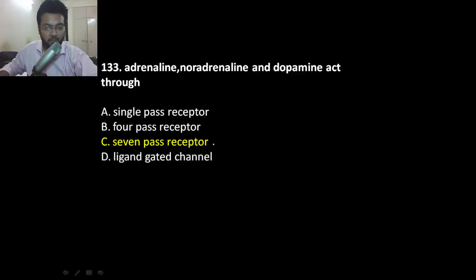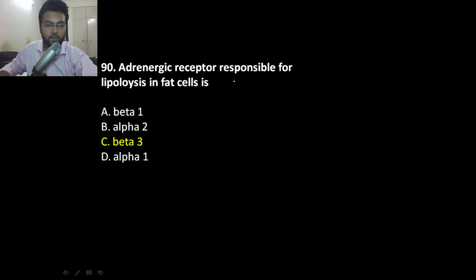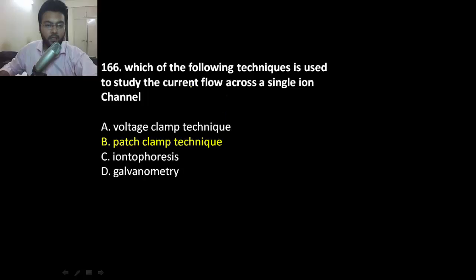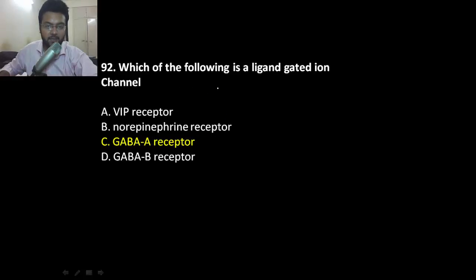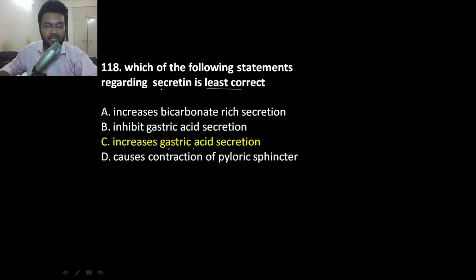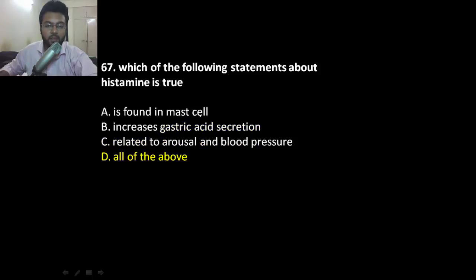Adrenaline, noradrenaline, and dopamine act through seven-pass serpentine receptors, also called G-protein coupled receptors. Lipolysis involves modified beta-1 receptors called beta-3. To study current flow across a single ion channel, the patch clamp technique is used. GABA-A is a ligand-gated ion channel; GABA-B is a seven-pass receptor. Secretin is released by S cells in the duodenum; it does not increase gastric acid secretion but promotes bicarbonate-rich secretion. Histamine is found in mast cells, increases gastric acid secretion, and also relates to blood pressure regulation.